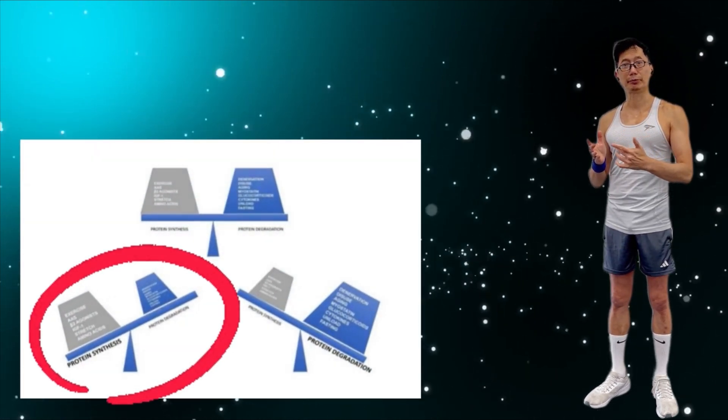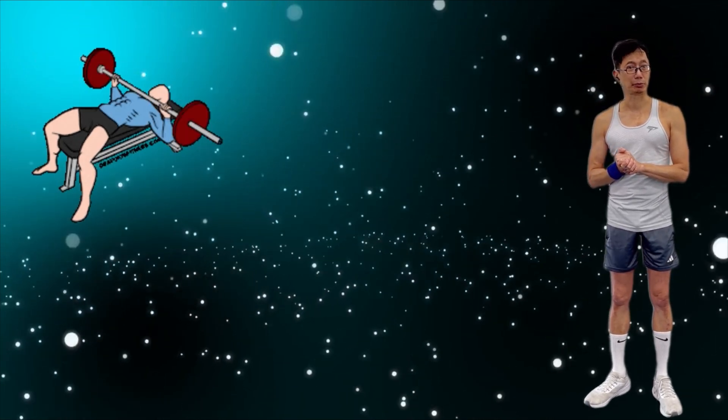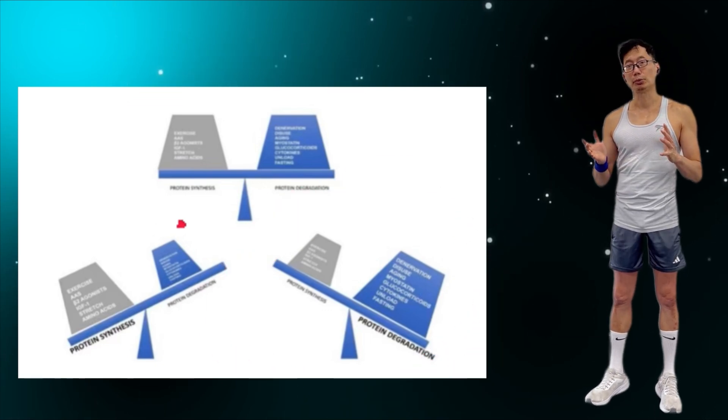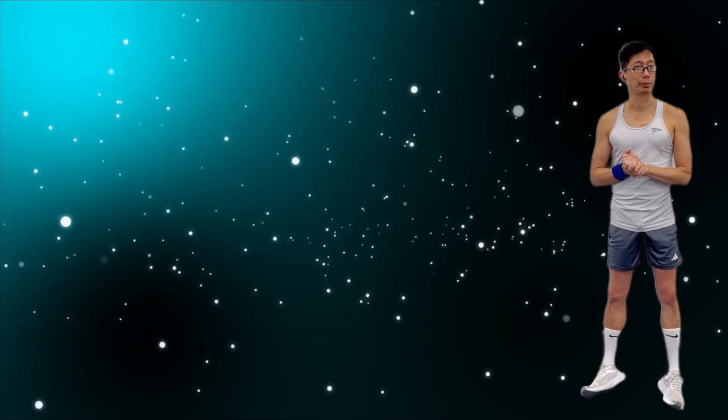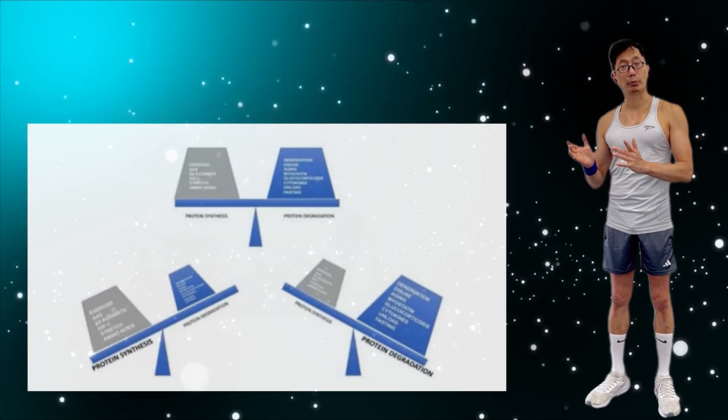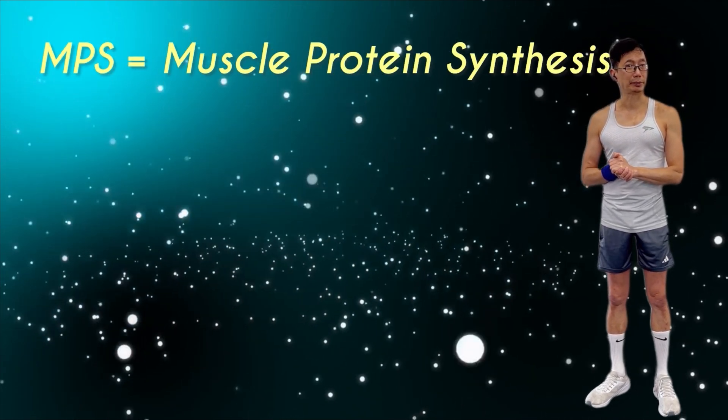If your protein balance is positive, the surplus can be directed by resistance training into muscle cells. But if you are in a negative or neutral protein balance, there is no fuel for the engine and no parts to make it bigger. So, to put on muscle, you will need to force your body into a net positive protein balance, then MPS gets the upper hand.